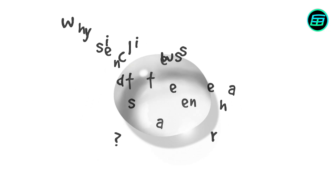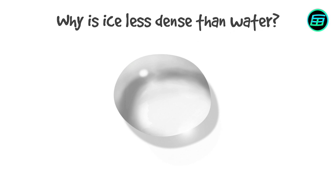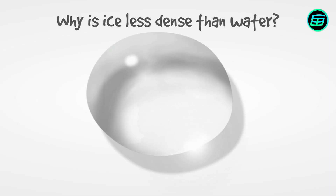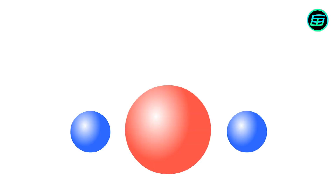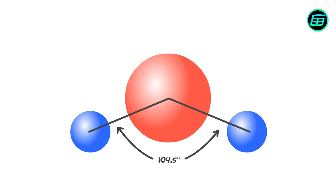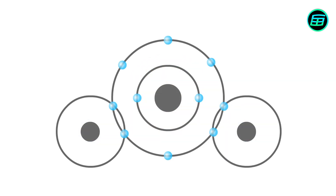In order to answer the first of these, we need to take a closer look at water's structure. A water molecule consists of two hydrogen atoms and one oxygen atom. Water molecules are not linear but angular. The oxygen and hydrogen atoms share electrons, creating a pair of chemical bonds.